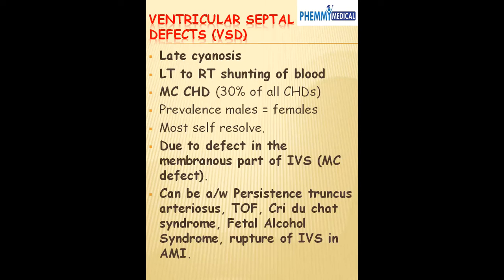VSD is most commonly due to a defect in the membranous part of the intraventricular septum. It can be associated with persistent truncus arteriosus, tetralogy of Fallot, fetal alcohol syndrome, and rupture of the intraventricular septum in acute myocardial infarction. One complication of MI is occlusion of the LAD — the left anterior descending artery — which supplies the anterior two-thirds of the intraventricular septum. If that vessel is occluded, it can lead to necrosis and rupture of the septum, causing a ventricular septal defect.